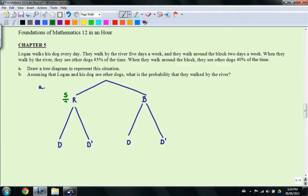And then what you're going to do is you're going to fill out the numbers. So 5 out of 7 days they are by the river. And then 2 out of 7 days they are by the block. 45% of the time they will see other dogs. That means 55% of the time they won't. 40% here, 60% here. So that's part A. It's pretty straightforward.